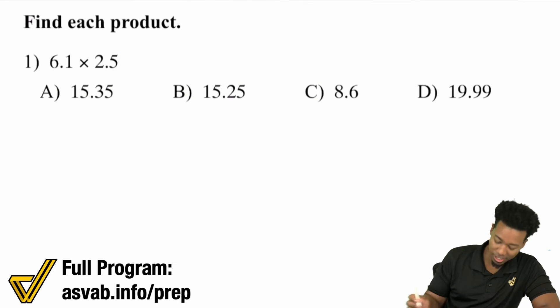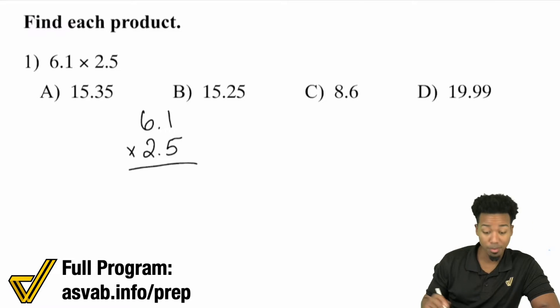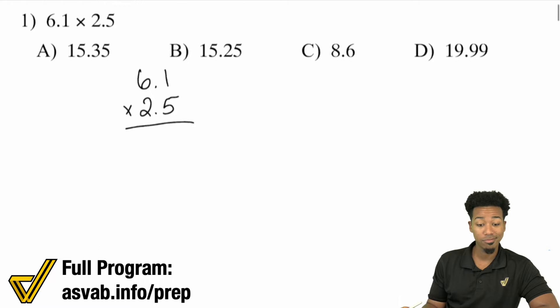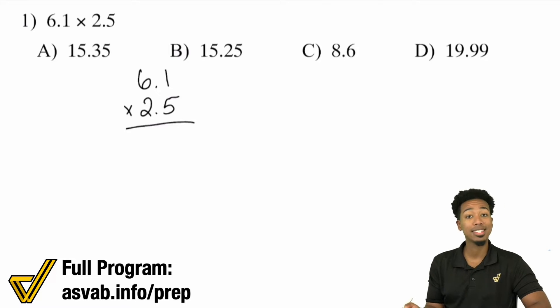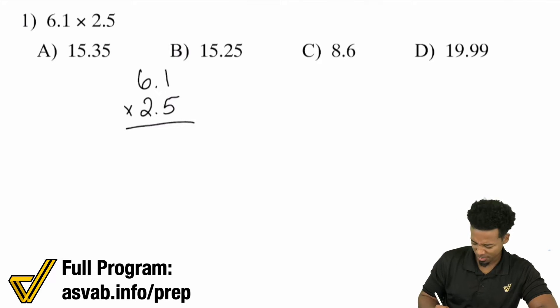Let's say we have 6.1 times 2.5. You're going to line it up. From this point forward, feel free to completely ignore the decimals. Step one, multiply it as if there were no decimals there to begin with. Let's figure out what that's going to be.